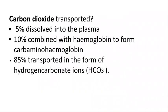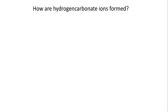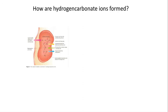Carbon dioxide is transported in three ways: 5% in the plasma, 10% binds directly with haemoglobin to form carbaminohaemoglobin — yes, you need to know that — and 85% forms hydrocarbonate ions. You also need to know how hydrocarbonate ions are formed, so let's go through that now.